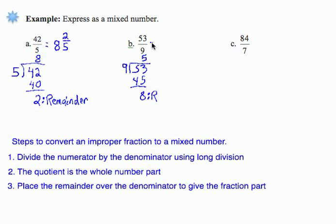The whole number part is this 5 here. So 53 over 9 is the 5 whole parts, and then 8 over 9. Once again, I can check. 5 times 9 is 45, plus 8 gives me 53, over the denominator, 9.